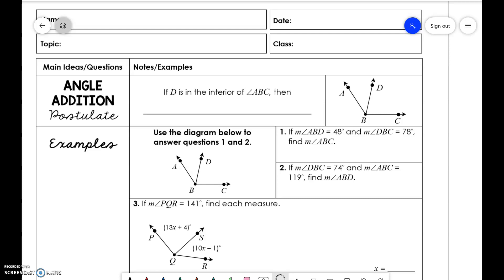So say D is inside this angle ABC here. It doesn't cut it equally. It just cuts the angle into two parts. So we can say angle ABD plus angle DBC is equal to the whole angle ABC.